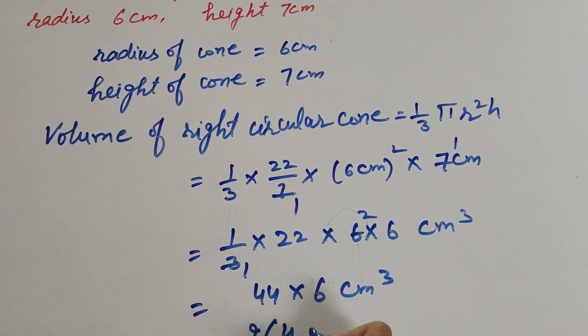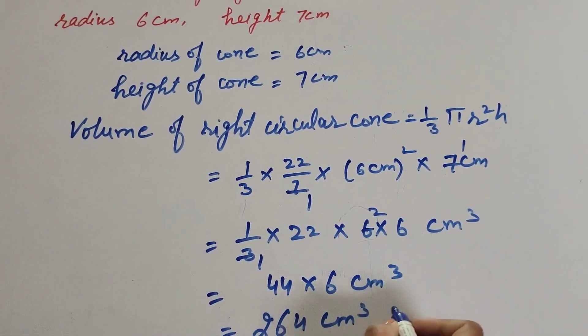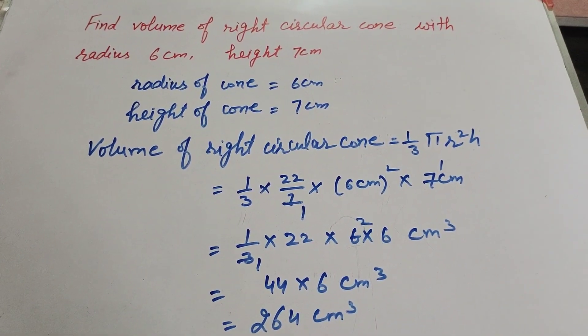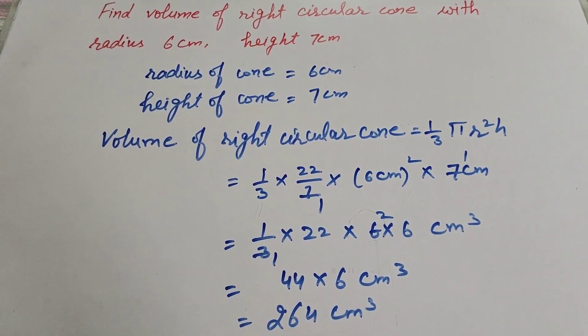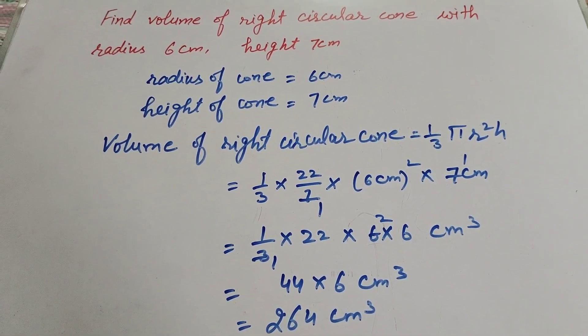gives us the answer 264 centimeters cubed. So the volume of right circular cone equals 264 centimeters cubed. Thanks for watching. Like, comment, and share my video. Subscribe to my YouTube channel.